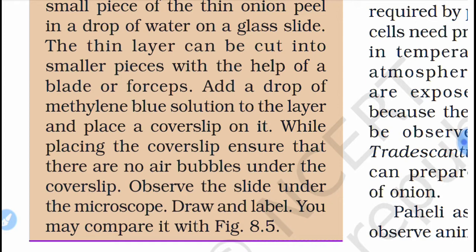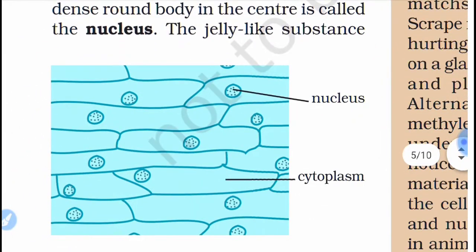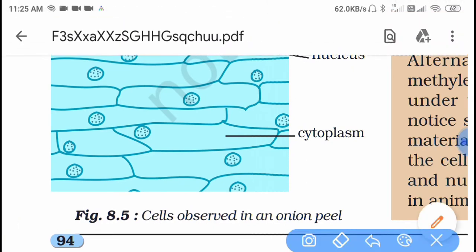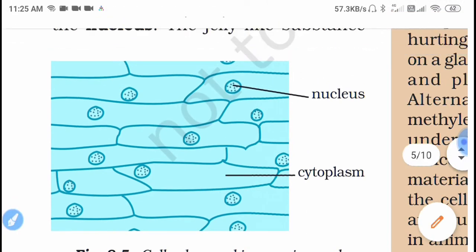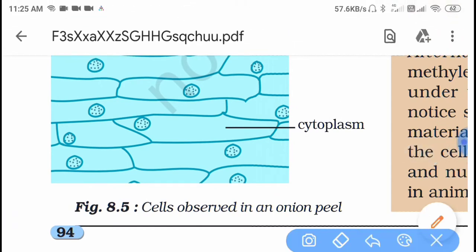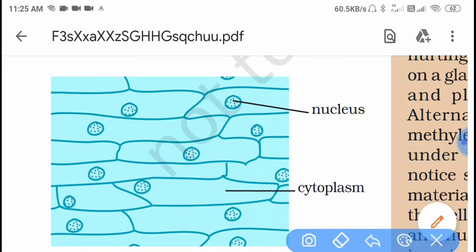Place a cover slip on it. While placing the cover slip, ensure that there are no air bubbles under it. Observe the slide under the microscope, draw and label it. You may compare it with figure 8.5, which shows the type of structure you will see — cells observed in an onion peel.